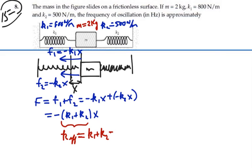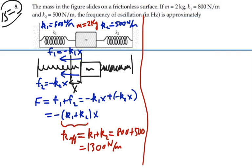Hence, that's going to be equal to 800 plus 500 or 1300 newtons per meter. And hence, we've characterized a Hooke's law force with an effective force constant of 1300 newtons per meter.